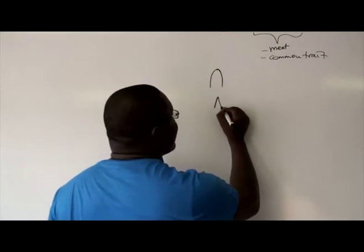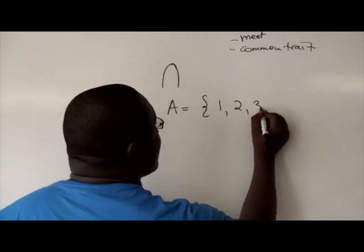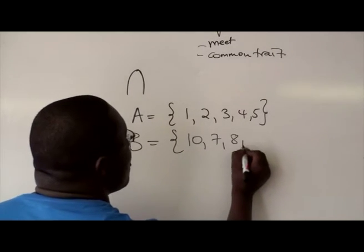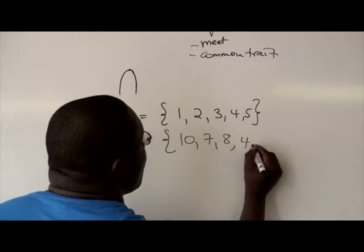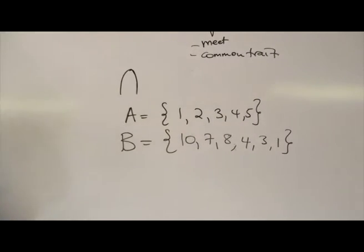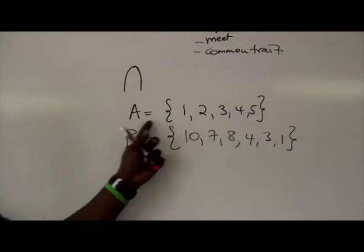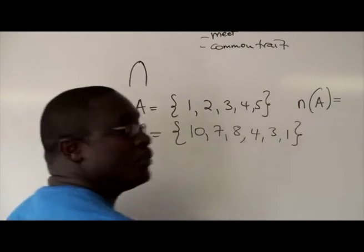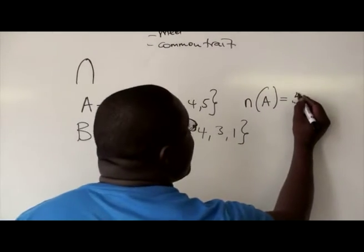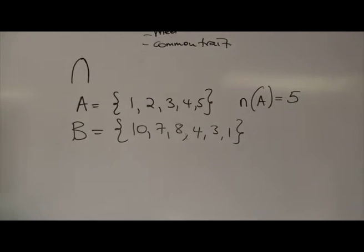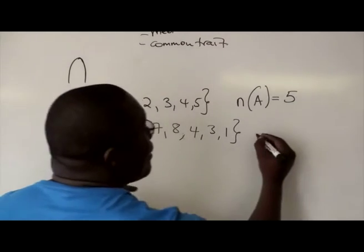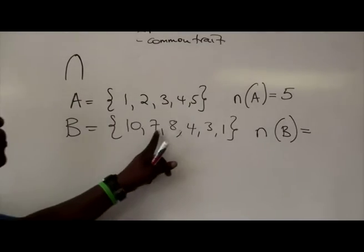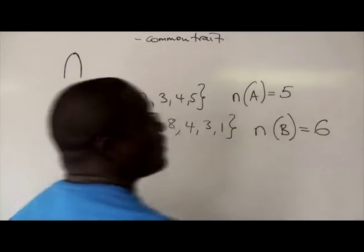Now, intersection. Let's say for example we have a set A, and we have the numbers 1, 2, 3, 4, 5. And then we have a set B, which is 10, 7, 8, 4, 3, 1. So these are our two sets. How many elements do we have in A? The number of elements in A is equal to 1, 2, 3, 4, 5. So there are five elements in A. And then how many elements do we have in B? Number of elements in B would be equal to 1, 2, 3, 4, 5, 6. So there will be six of them.